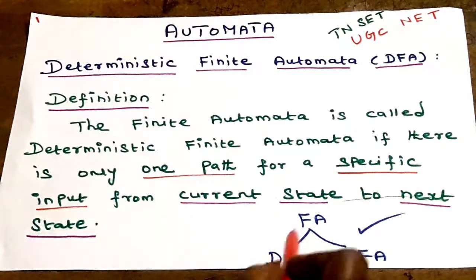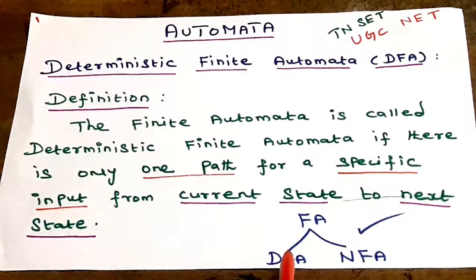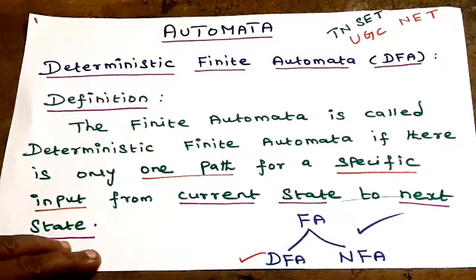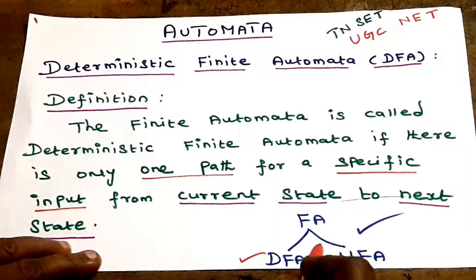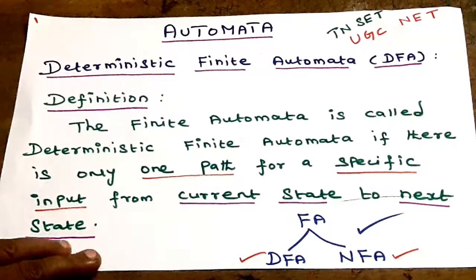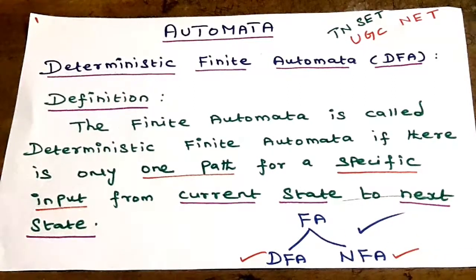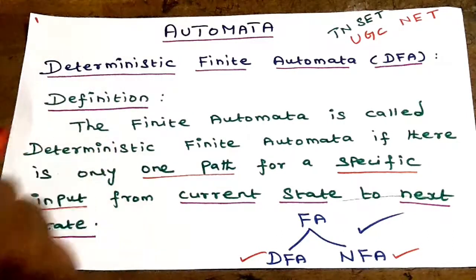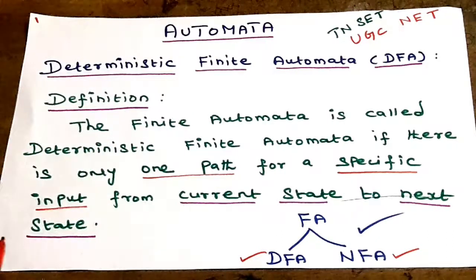Finite Automata in general have two types. The first is Deterministic Finite Automata, i.e. DFA. The other one is Non-deterministic Finite Automata, i.e. NFA.